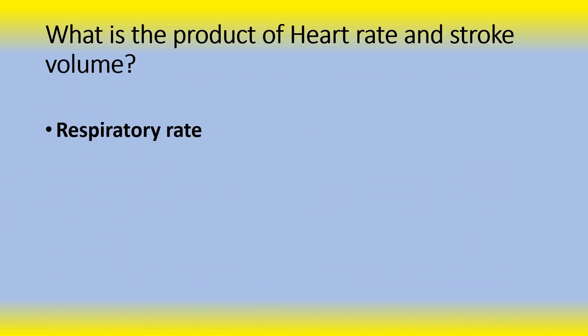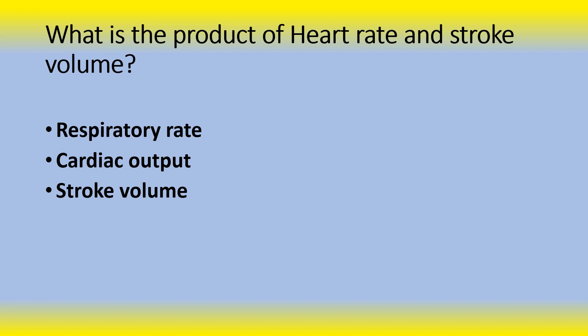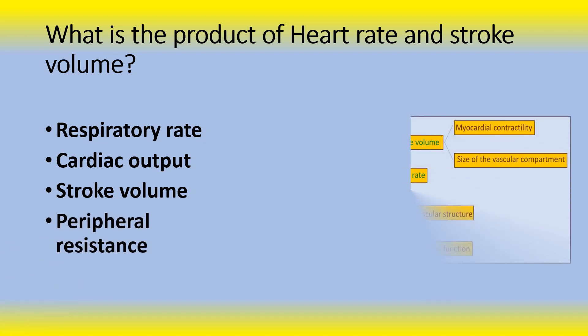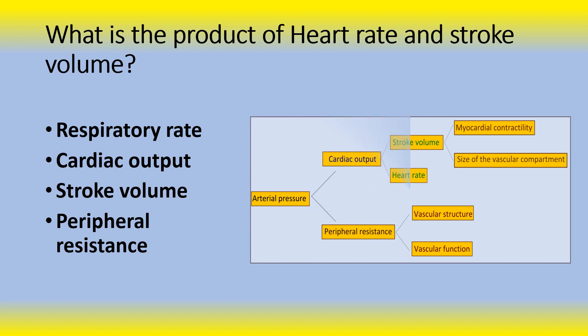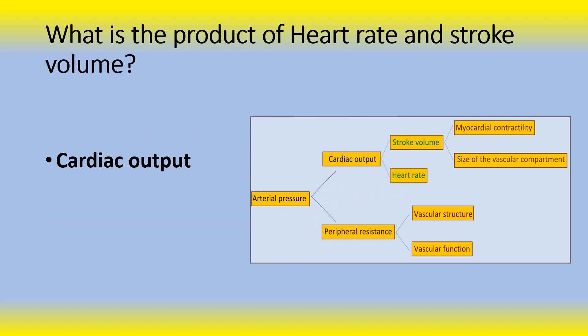Next question: What is the product of heart rate and stroke volume? Is it the respiratory rate? Is it the cardiac output? Is it the stroke volume? Or is it the peripheral resistance? The answer is cardiac output.